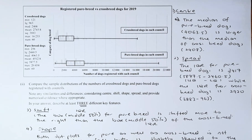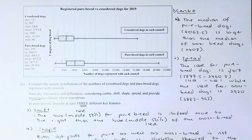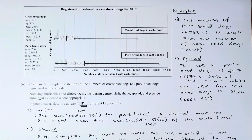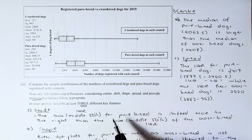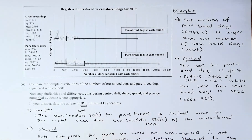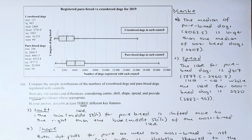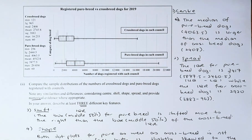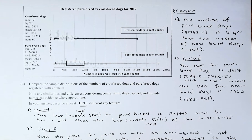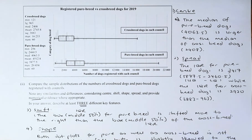Remember the word numerical — you need to show evidence. In the answer, describe at least three different features. When they say at least three: one answer correct gets you achieved, two answers correct gets merit, three or more gets excellence. So I'm going to give you four features so that if you miss one, you are still able to get excellence.